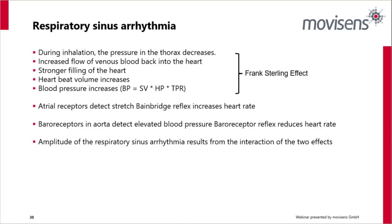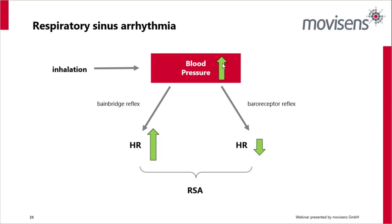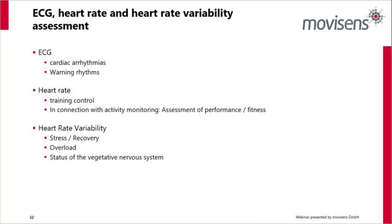During inhalation, pressure in the thorax lowers and increases venous blood flow back into the heart — stronger filling, increased beat volume, and increased blood pressure. Blood pressure can be calculated as stroke volume multiplied by heart period multiplied by total peripheral resistance. Atrial receptors detect stretch via Bainbridge reflexes and increase heart rate, whereas baroreceptors in the aorta detect elevated blood pressure via baroreceptor reflexes and reduce heart rate. The amplitude of the RSA results from the interaction of these two effects — inhalation causes blood pressure increase, the Bainbridge reflex raises heart rate, and then the baroreceptor reflex works against it.